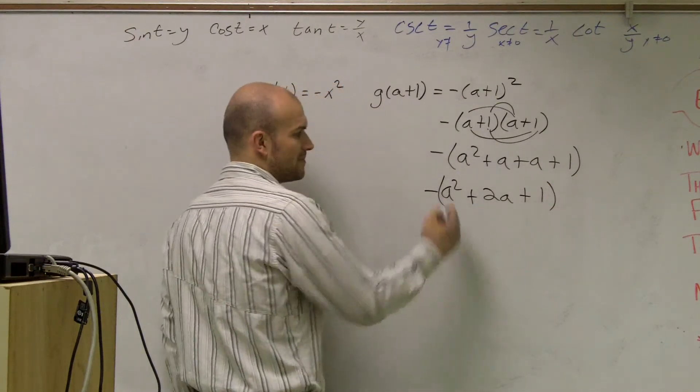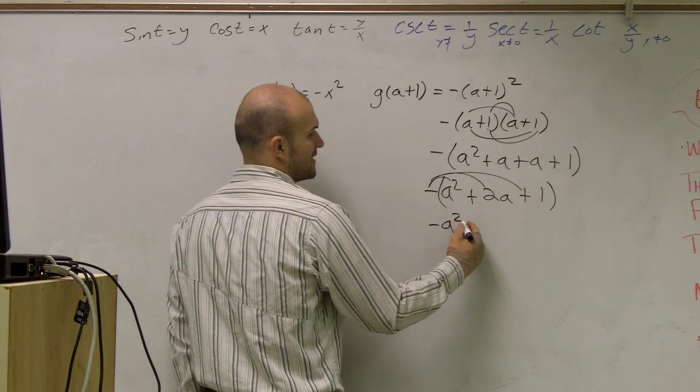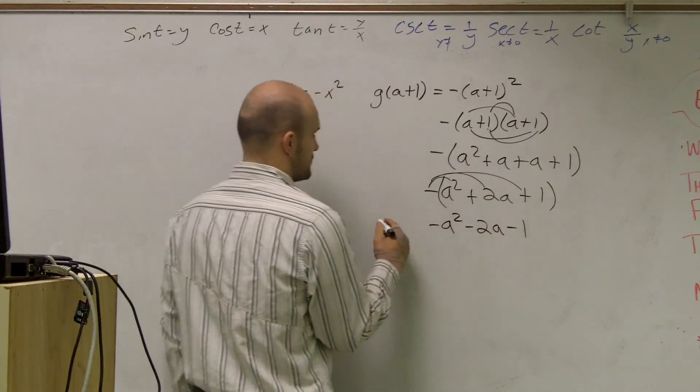My last step is to distribute my negative sign to all three terms. So I end up with -a² - 2a - 1.